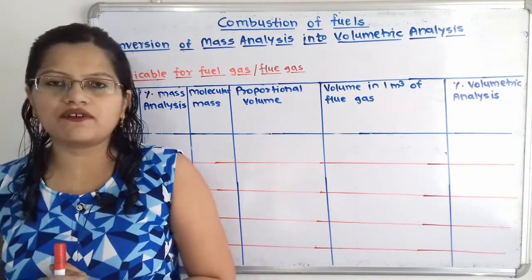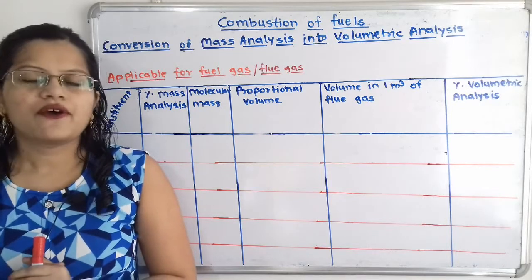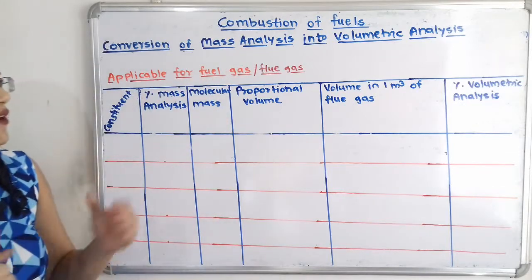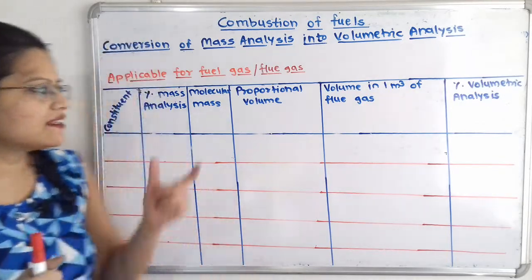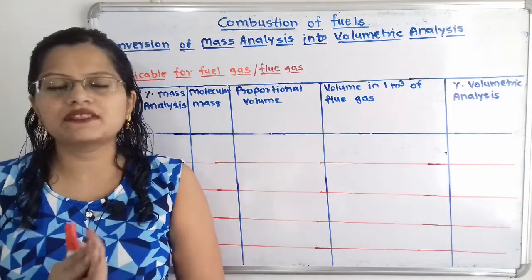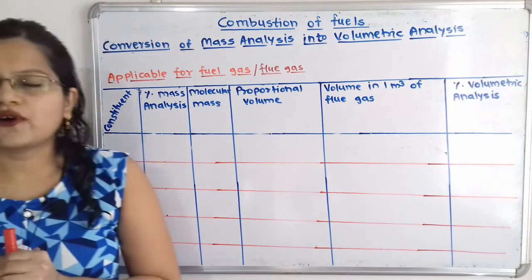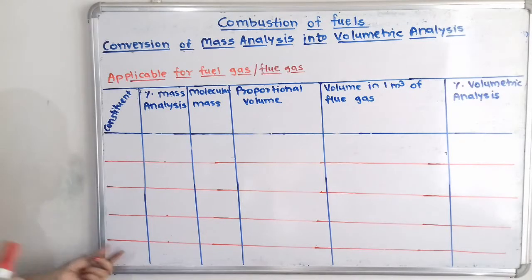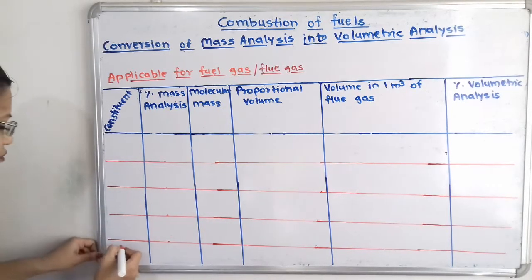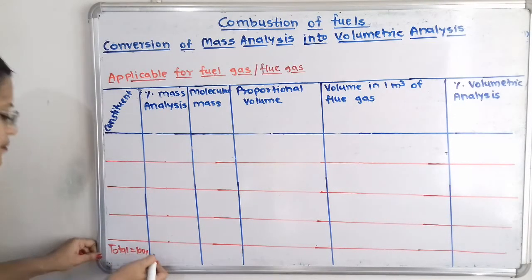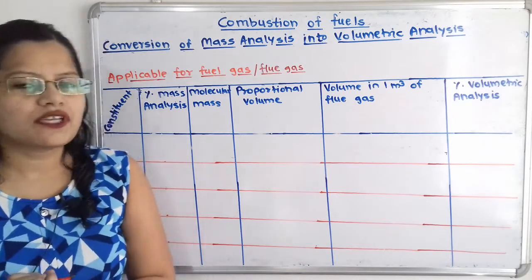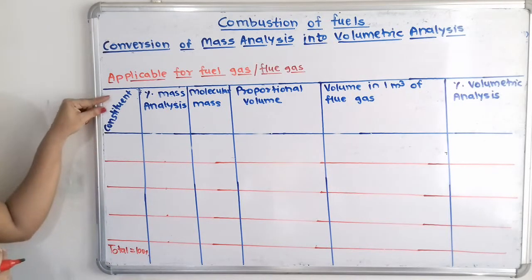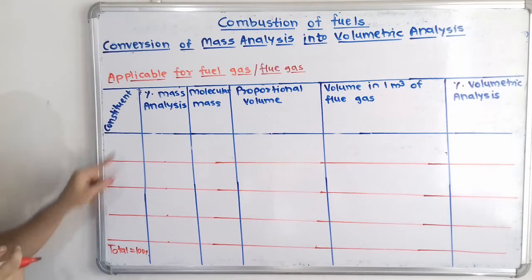Now we will understand conversion of mass analysis into volumetric analysis. When percentage composition by mass for the different constituents in the fuel gas or flue gas is given, we have to convert it into percentage volumetric analysis. A table is used for this. The fuel gas or flue gas is a combination of different gases, and for each constituent the mass percentage is given.